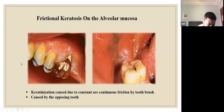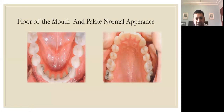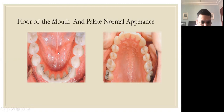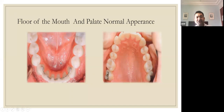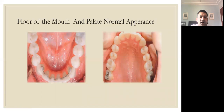Regarding the floor of the mouth: the lingual caruncle has two small openings through which the Wharton's duct of the submandibular salivary gland opens. The most common lesions seen in the floor of the mouth are ranula or sialolith. These are sometimes mistaken or confused with other pathologies.